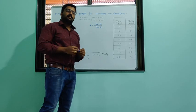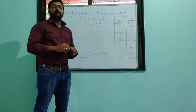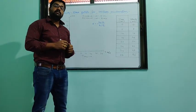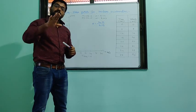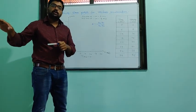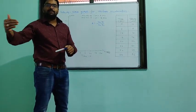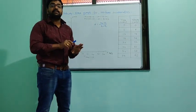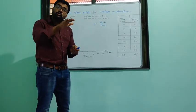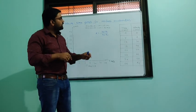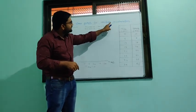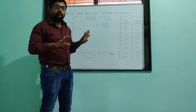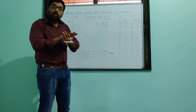In previous graphs, we studied uniform velocity. In uniform velocity, velocity remains constant throughout the motion — as time changes, velocity does not change. Now here, acceleration is uniform. Uniform means constant.